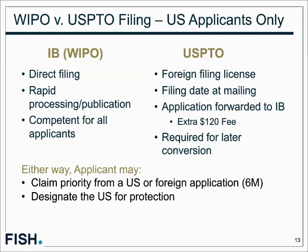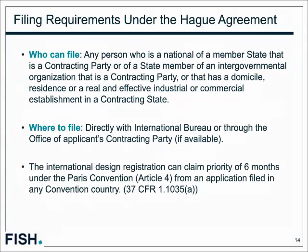It will be strongly recommended that if you have a design conceived or developed in the US, the foreign filing license requirements still apply. If you file with the US PTO, the PTO will give you a filing receipt, determine there's no security problem, assign a filing date, and then forward it to the International Bureau for a $120 fee. Filing with the US PTO is a requirement if you want to later convert a Hague application into a regular US design application. Either way, the applicant can claim priority from a US design application within the six-month window and designate the US as a country in which protection is sought.